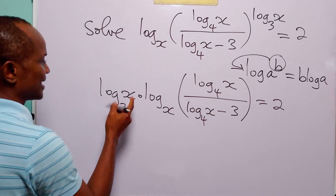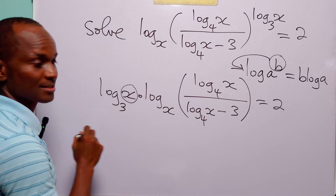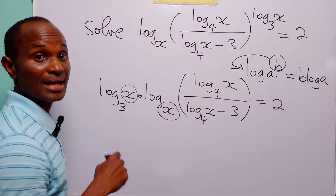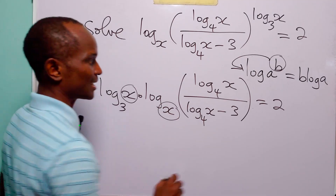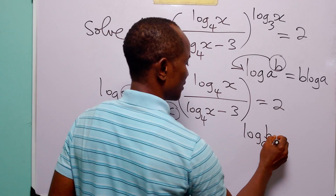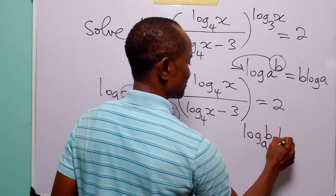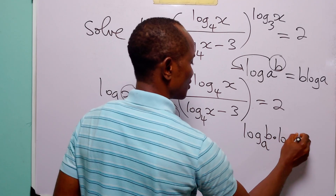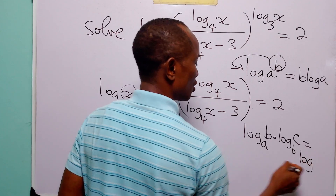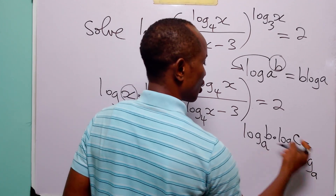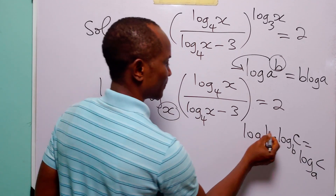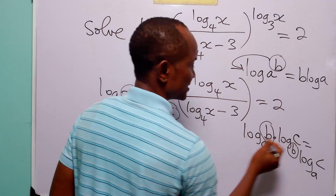Here you can see that we have x, and in the base of this log term we also have x. Remember that when we have log to base a of b multiplied by log to base b of c, this is simply equal to log to base a of c.